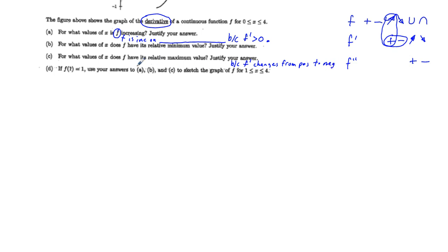And conversely for Part B, f has a relative minimum at x equals blank. The justification is: because f prime changes from negative to positive — instead of changing from positive to negative as in the maximum case. So it's just a matter of going up and reading off the chart where each of these changes happens.